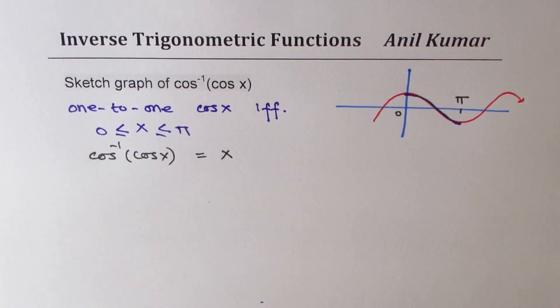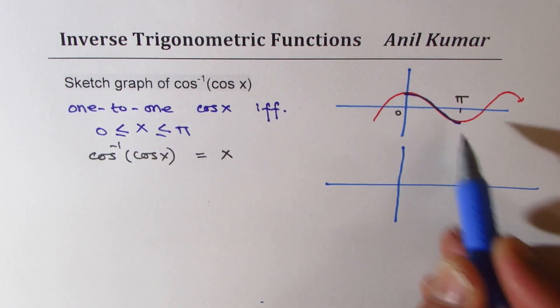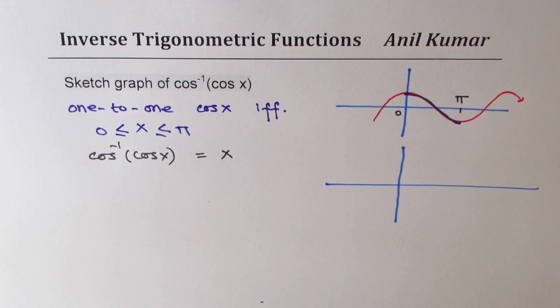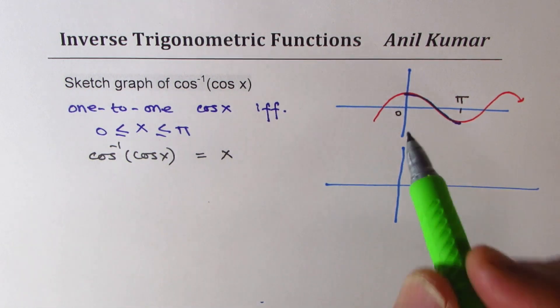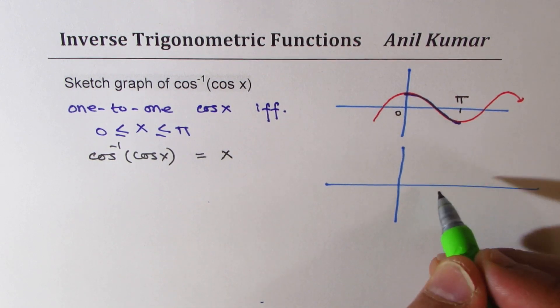If I have to sketch cos inverse x, let me do it in the first domain, 0 to pi first. At 0, it is going to be 0, and at pi, its value will be pi.